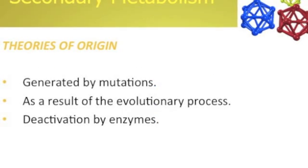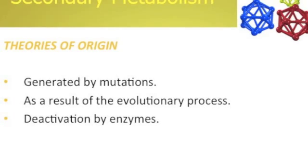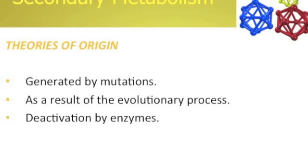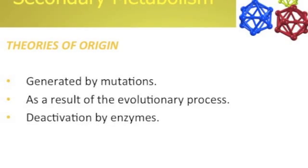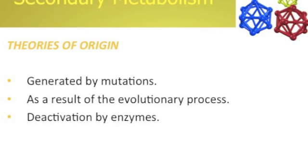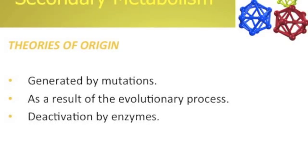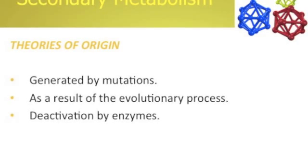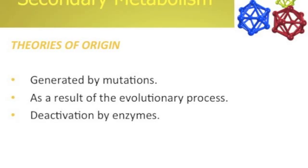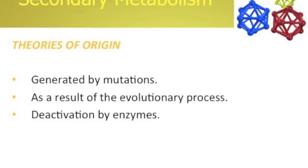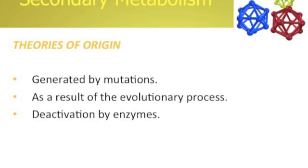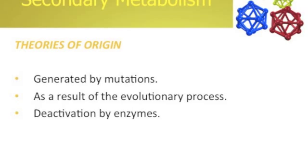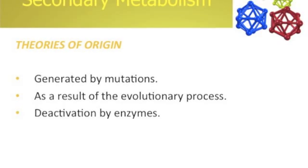In secondary metabolites, there are several theories about the origin of these metabolites. In the first instance, we have compounds generated by bad mutations in proteins or in the DNA. Also, we consider metabolites generated as a result of the evolutionary process in organisms. And finally, we find compounds produced by enzyme deactivation.